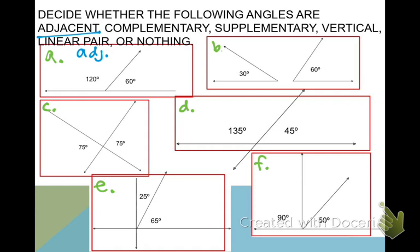Is B adjacent? No, not adjacent. So reason being they have the same vertex, they have the same wall for A. Letter B, what did we decide? No, not adjacent. C, no, not adjacent. D, they are adjacent because of this wall they share. E, they are adjacent. And then F, they are not adjacent.